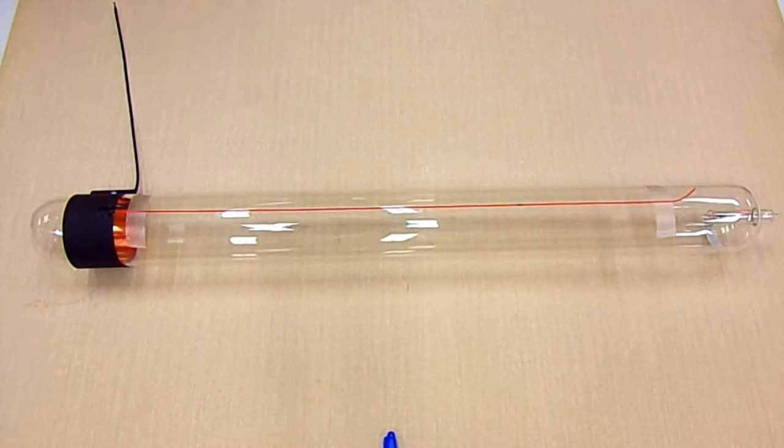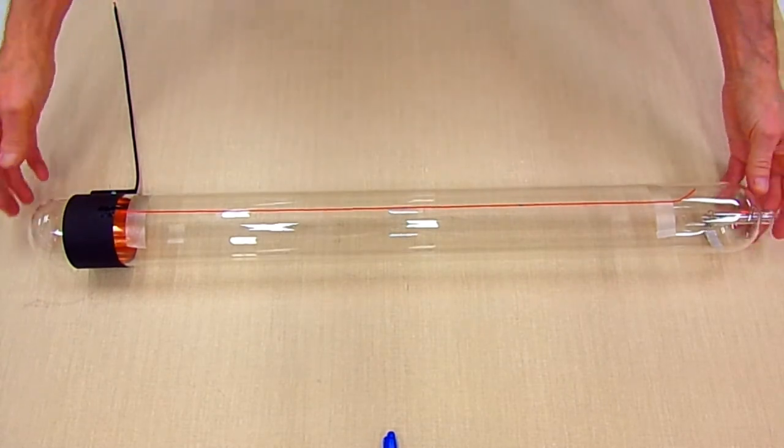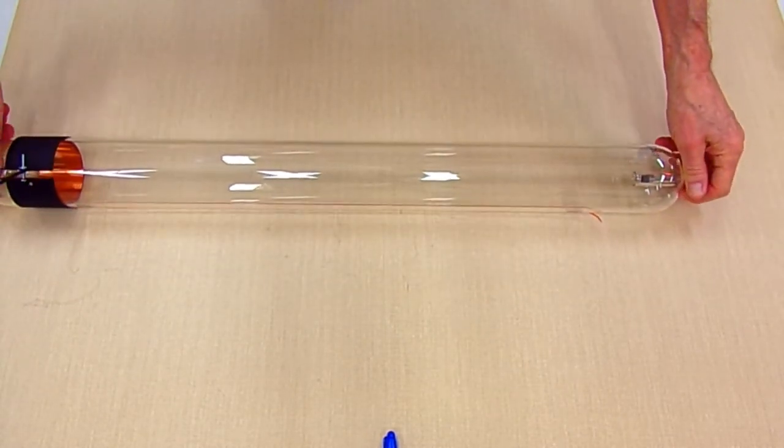After the adhesive on the first side wire has hardened, you may begin installation of the second electrode on the plasma tube.